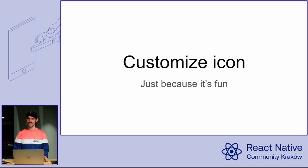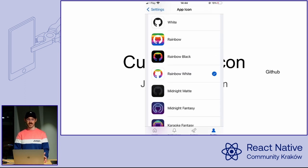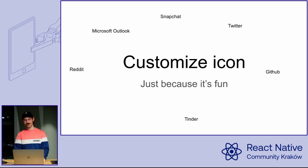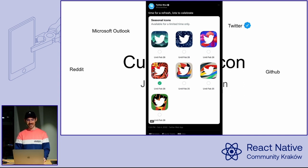First is customizable icons. Not many people use it, not many apps have it implemented. I first realized I could do it in the GitHub app when I chose my beautiful rainbow white icon — and it was super cool. The karaoke fantasy on the bottom was also pretty good. Then I realized more and more apps are implementing this: Snapchat, Tinder when you get Tinder Pro, Reddit, and all applications for young people. Microsoft Outlook, of course. And my favorite is Twitter — when you pay for Twitter Blue, you don't only get the badge, you also get customizable icons and seasonal icons. So yeah, you don't only steal identity, you can always have a different icon.